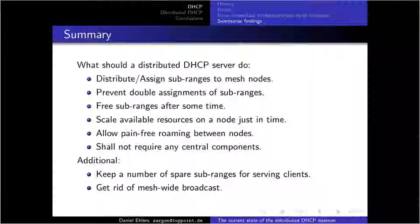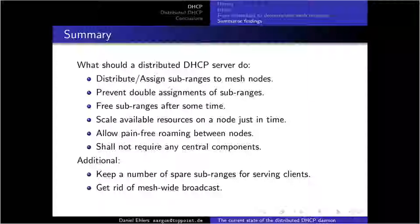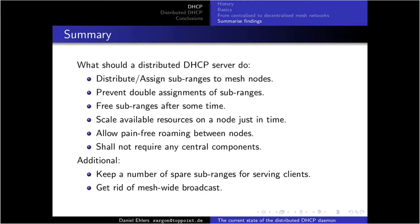Finally, what happens when clients roam between nodes? If I have an address from node A and roam to node B and want to renew it, node B knows nothing about that address and will likely say no — you need a new one. In that moment every TCP connection that client has is broken. To summarize: a distributed DHCP server should distribute and assign sub-ranges to mesh nodes, prevent double assignment, free sub-ranges after some time, scale available resources just in time, allow pain-free roaming, require no central component, enable instant client serving, and eliminate mesh-wide broadcasts.